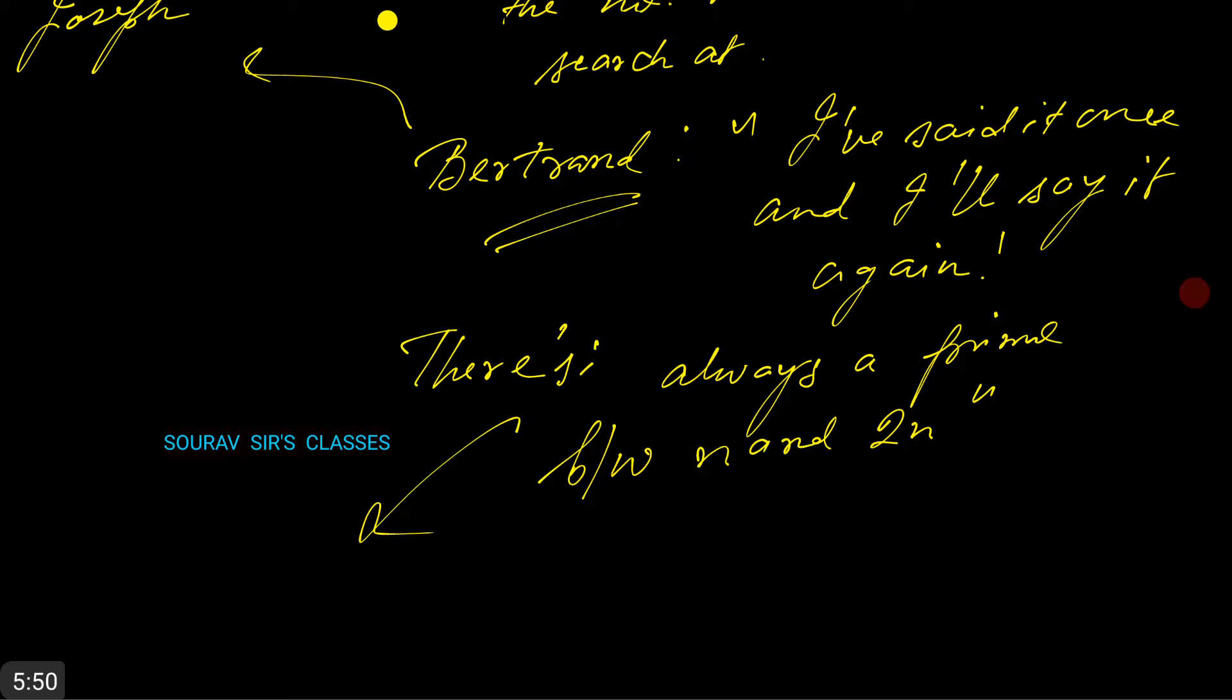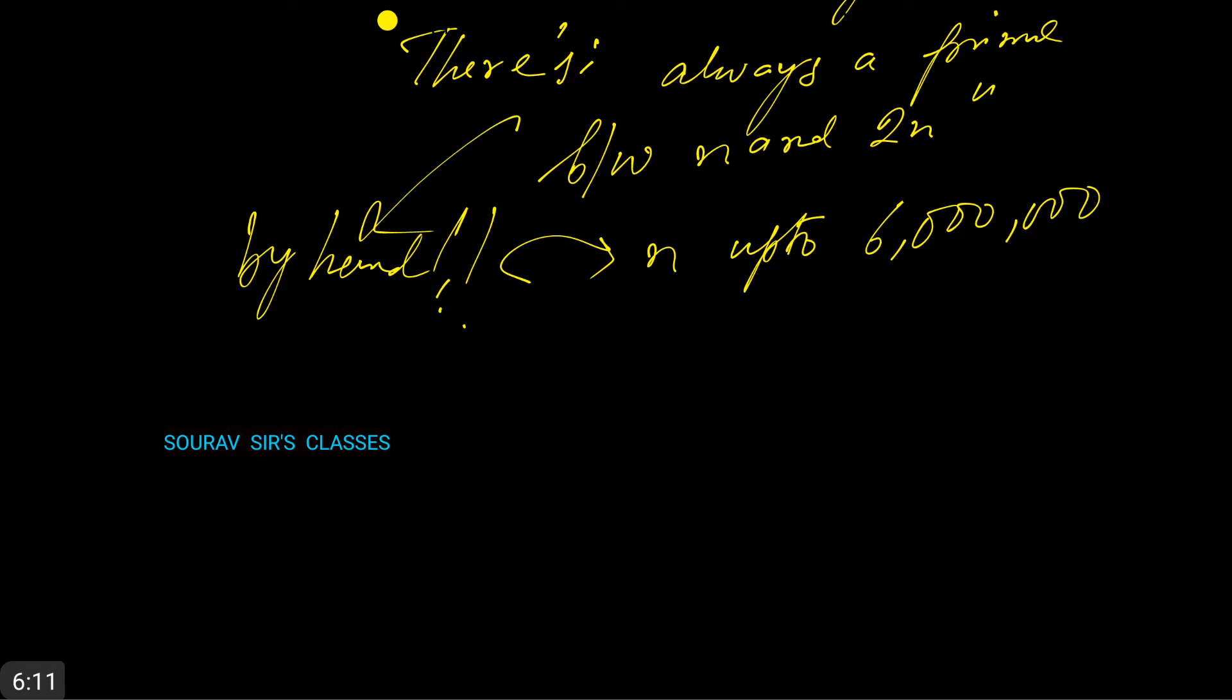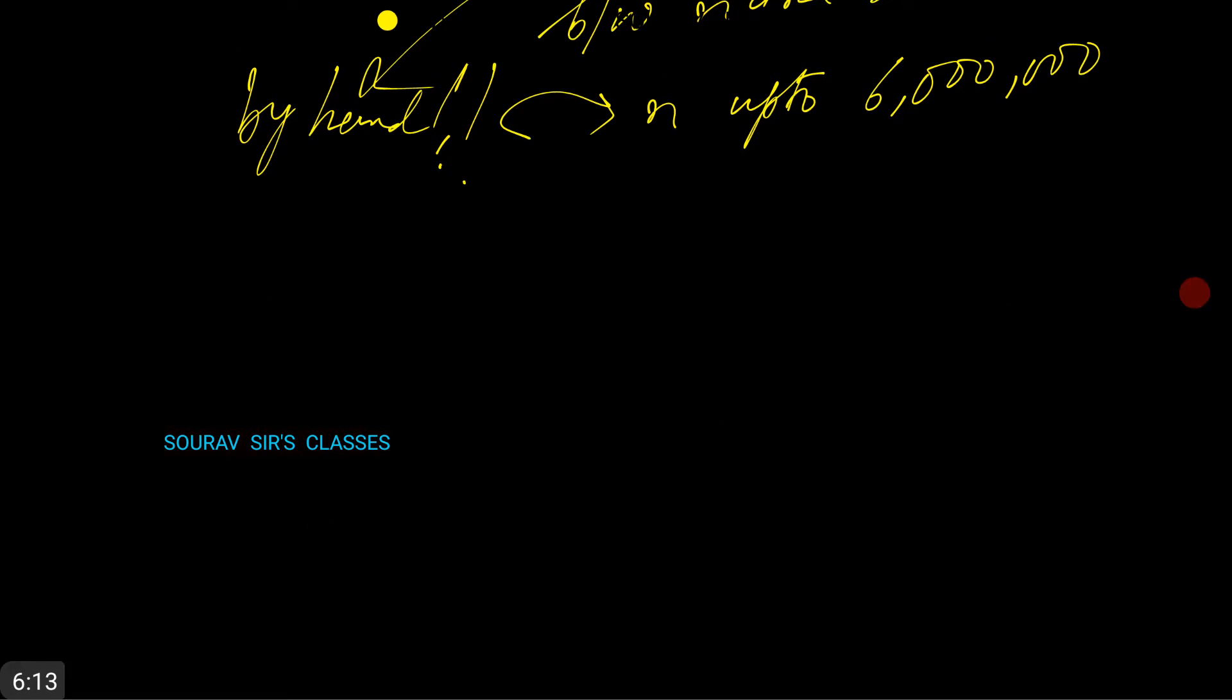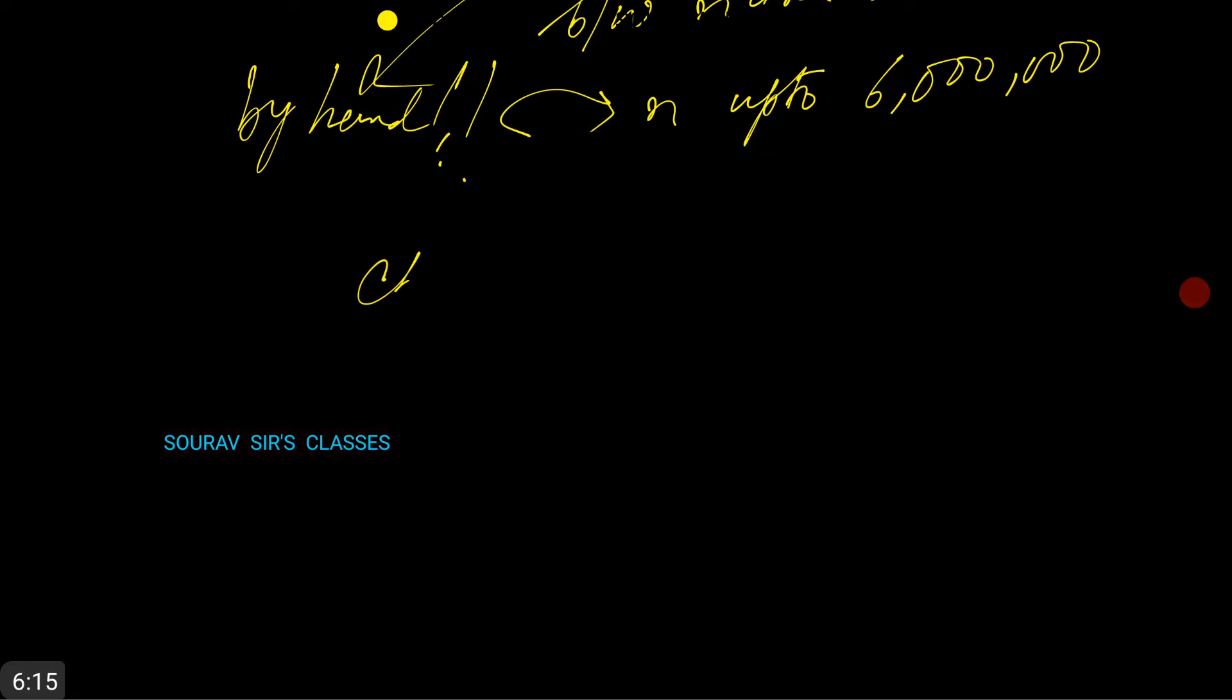Mr. Bertrand verified the statement by hand for all positive integers n up to 6 million - he was a hard-working man. And along came this person called Chebyshev.